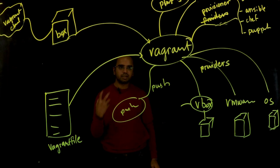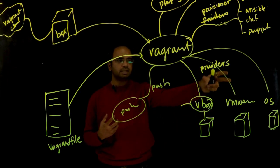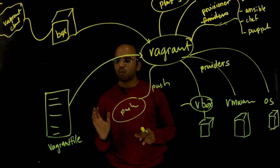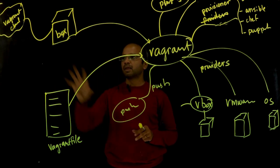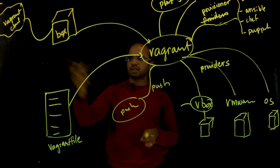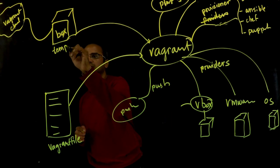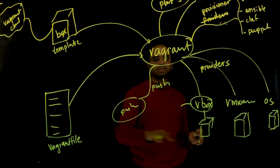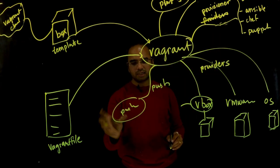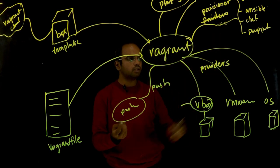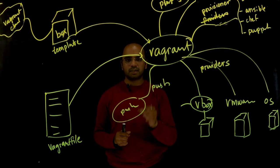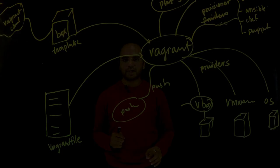Those are the core configurations or primitives that Vagrant offers you: mainly the providers, the Vagrant file (that's probably the most important one, that's how we interact with Vagrant), the concept of box which is nothing but a template, and then you have plugins, provisioners, and push. Those are the core concepts related to Vagrant.